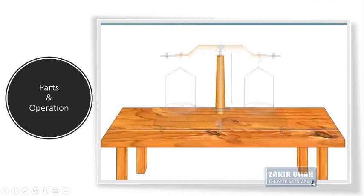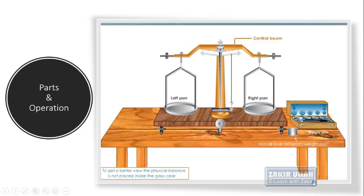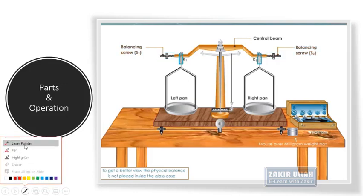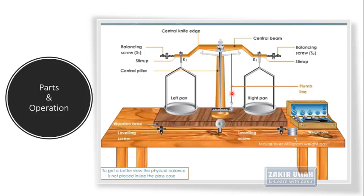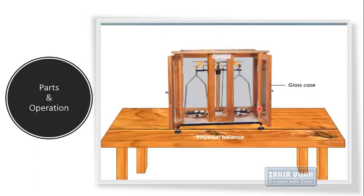A physical balance is shown here, taken out of its box for a better viewing experience. It comes with a weight box containing different weights. There is a central beam connected with balancing screws to adjust the level to zero, knobs K1 and K2 connected with the stirrup, a central knife edge connected with the central pillar, a wooden base with a plumb line showing the level, a beam support, a pointer showing any error, a graduated scale below, two pans, and a glass case.